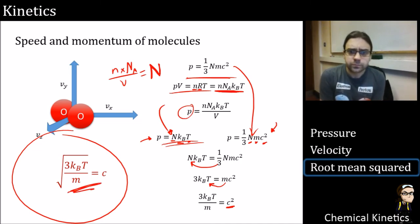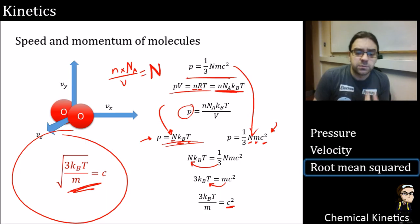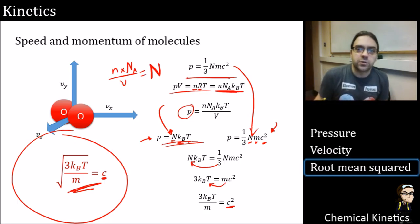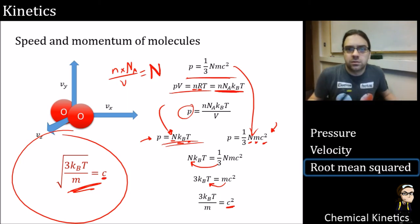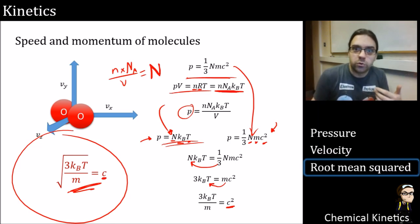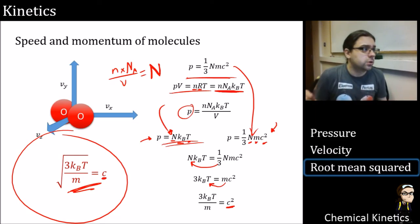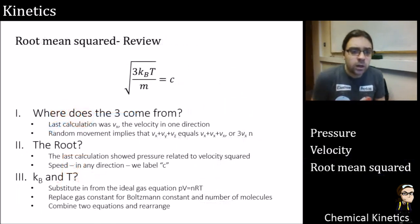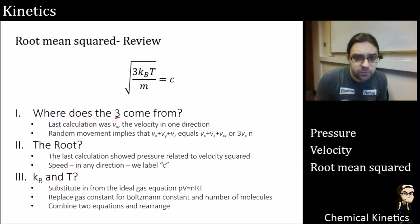We take the square root to get our final equation after about 20 minutes of derivation. This is the formula you need to be aware of and will have to apply: the root mean squared speed c equals the square root of (3kbT / m). Speed of a molecule depends on only two factors: its mass and the temperature. The constants — Boltzmann's constant — mean all gases effectively behave the same way regardless of what they are, which is one of the great things about kinetic theory.